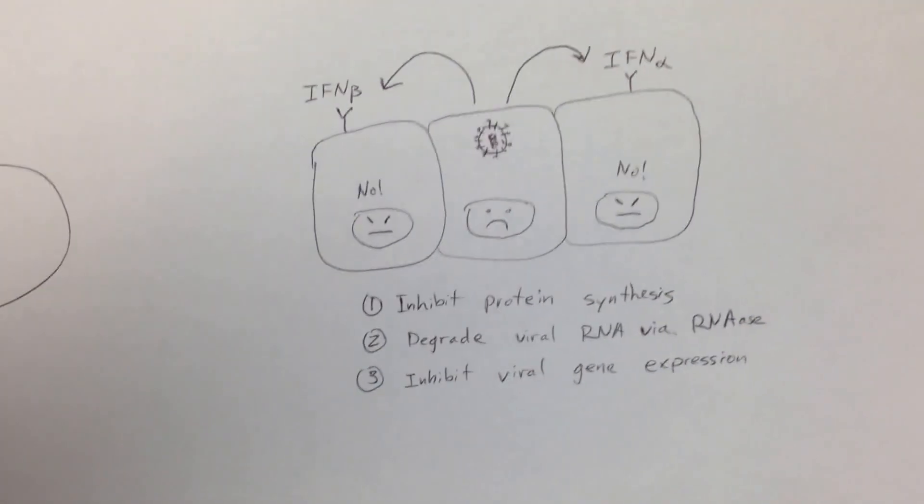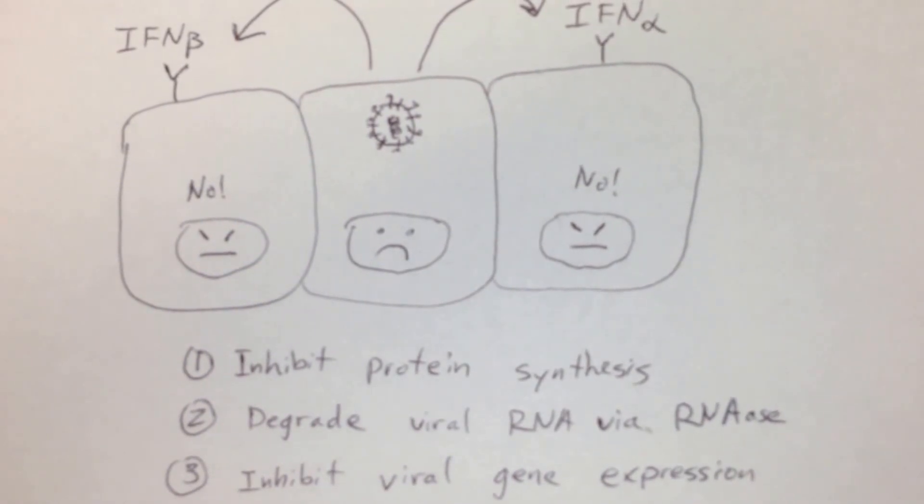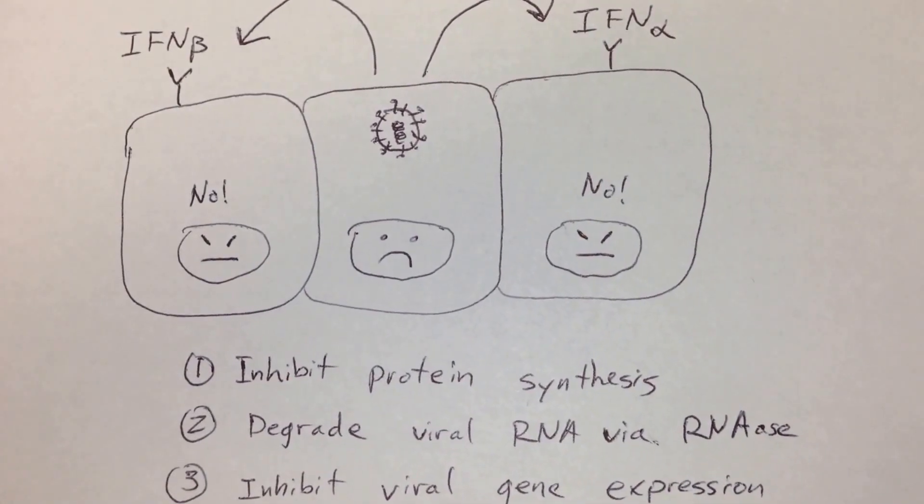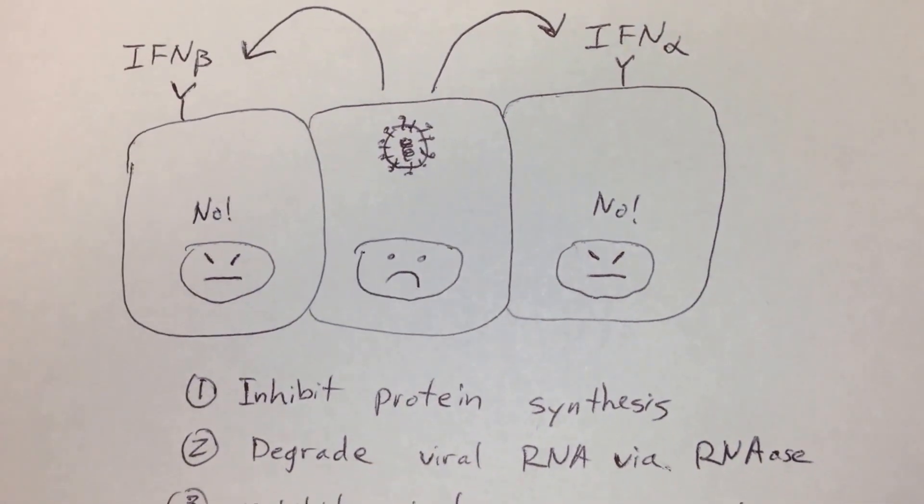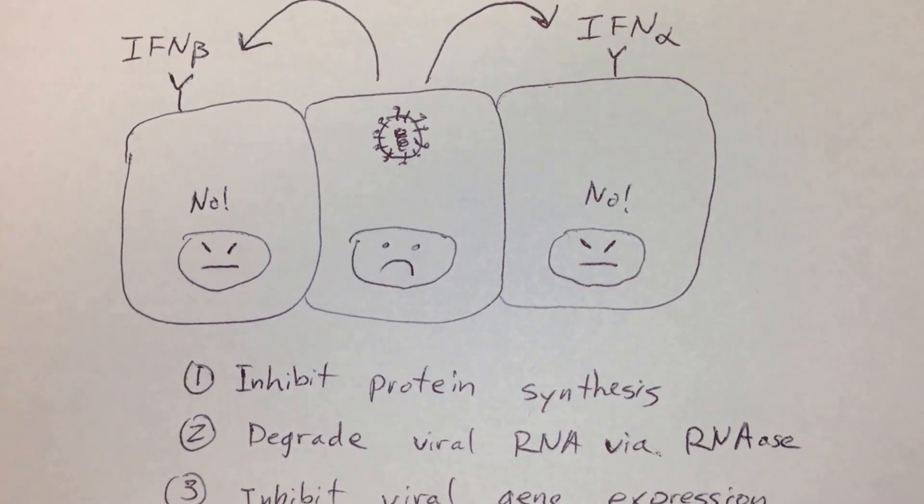The next thing that we're going to look at is interferon alpha and beta. So in the middle here you can see that we have a cell that was invaded by a virus. We have the virus at the top and he's sad because he's going to die.